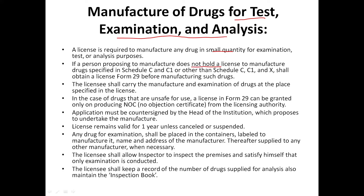If we are using any other drugs — C, C1, and X — we will obtain the manufacturing license. If we are using any other drugs, we will obtain the manufacturing license in Form No. 29.